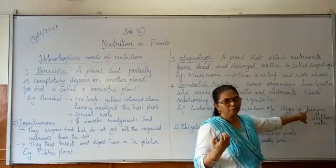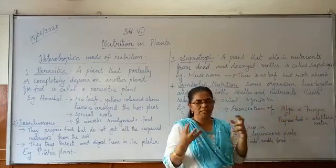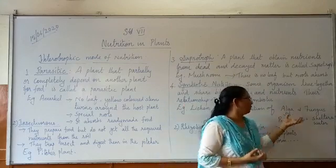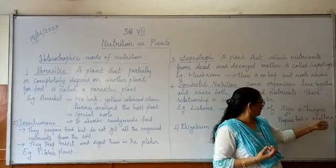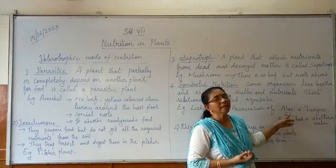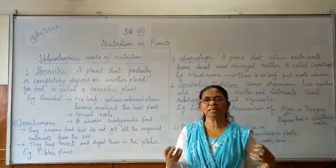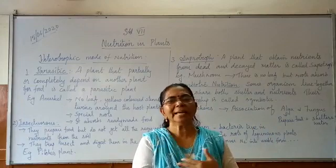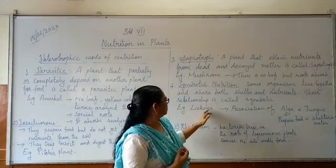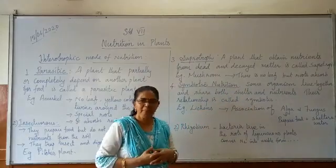So alga and fungus live together and help each other to prepare food. The fungus gives shelter to the alga and supplies it with water. These two organisms live together and help each other, sharing shelter and food. This association is called symbiotic nutrition. In this, both organisms benefit from each other.